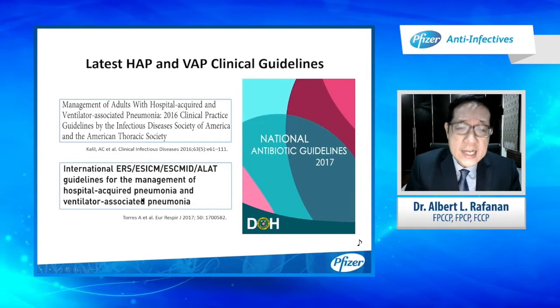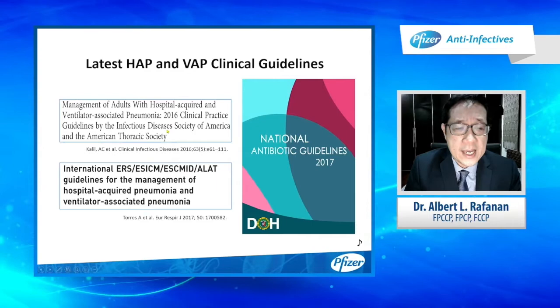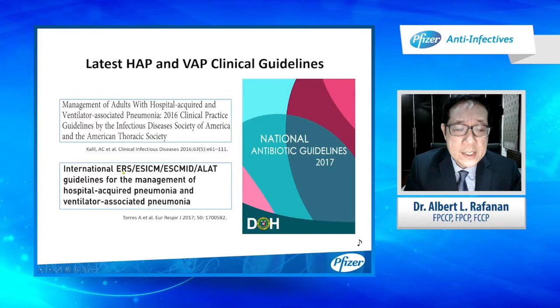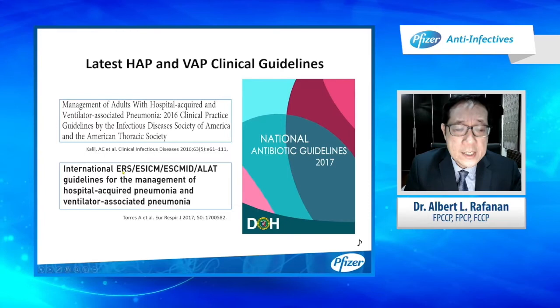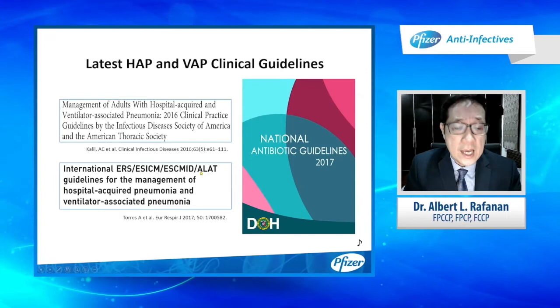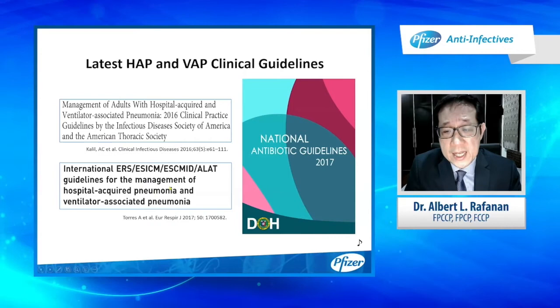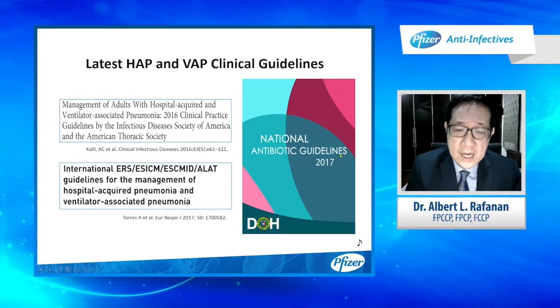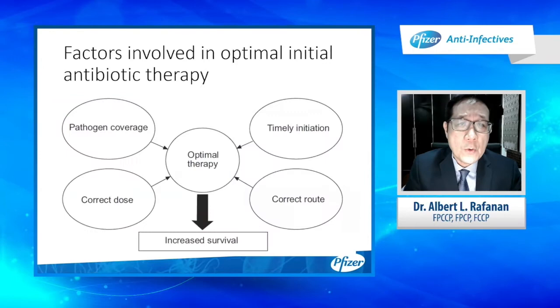These are the three guidelines we have. The American Thoracic Society and IDSA guidelines were published in 2016. In 2017, the Europeans published the ERS/ESICM/ECMID guidelines for HAP and VAP. Lastly, we have the most current National Antibiotic Guidelines published by the Philippine Department of Health. We will be discussing the DOH National Antibiotic Guidelines since these apply to our locality.